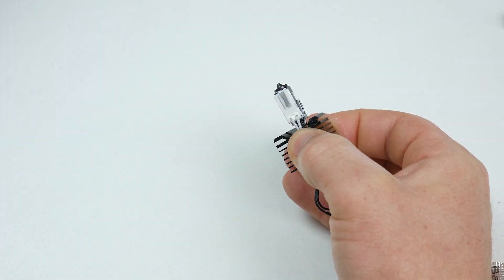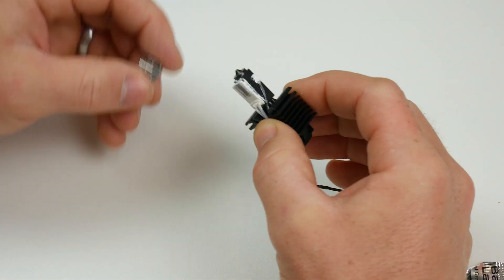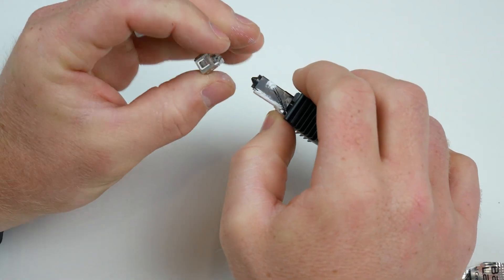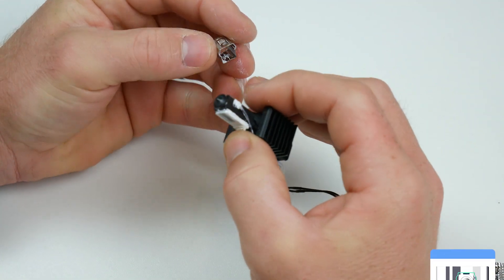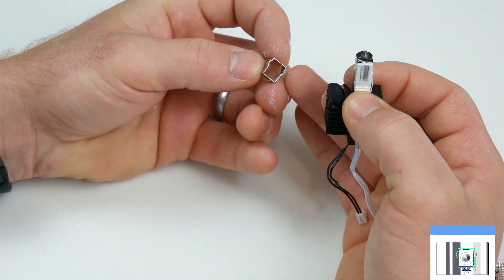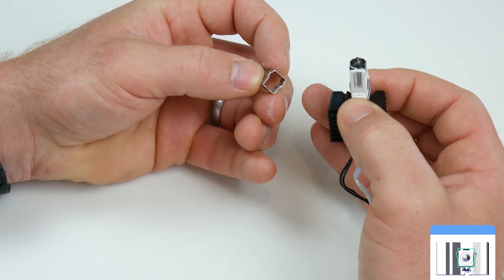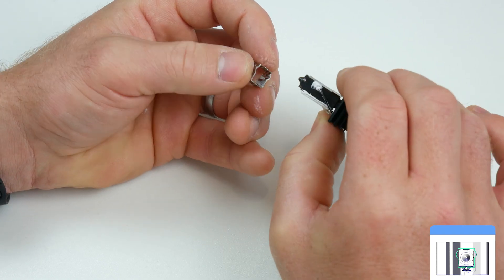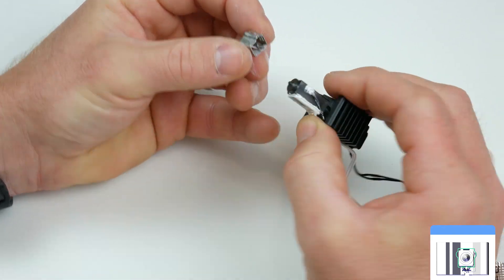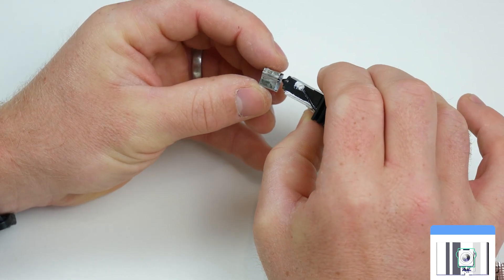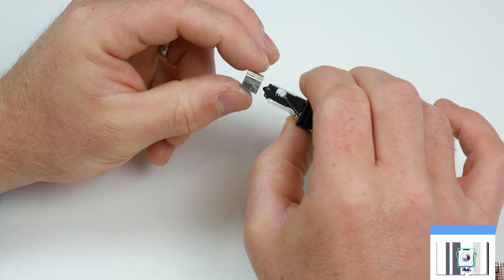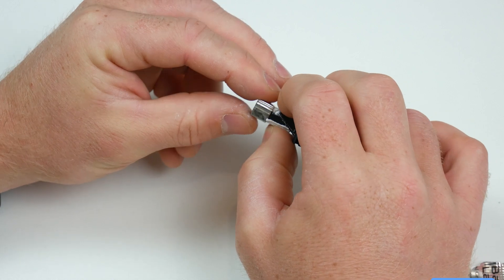Now what we've got to do is put the retaining clip back onto the hotend itself. Where I mentioned earlier that there are two raised areas on the retaining clip, both sides, we just need to make sure that those line up with the temperature sensor. So raised part of the retaining clip there is lining up with the temperature sensor on that side, and we just gently slide that back over the whole assembly.